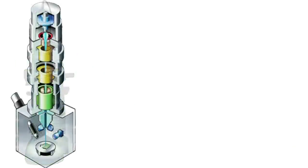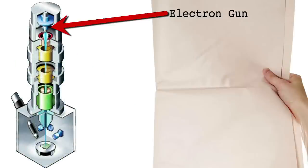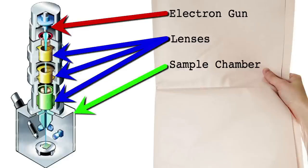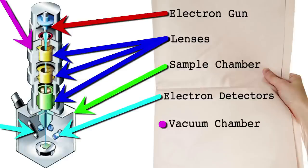An SEM has several key components: an electron gun, lenses, a sample chamber, electron detectors, and a vacuum chamber.